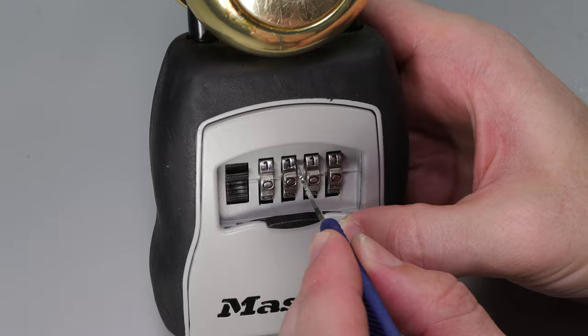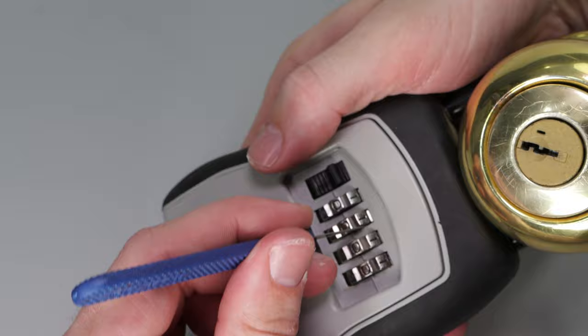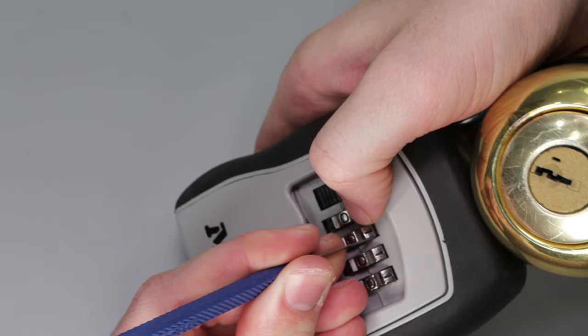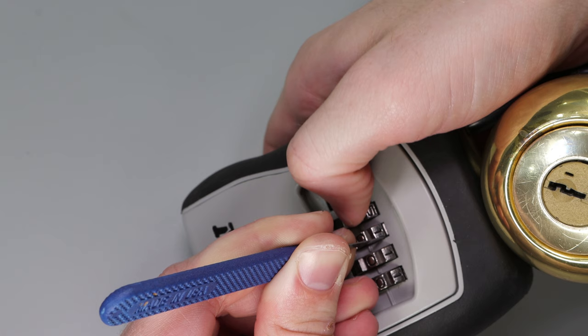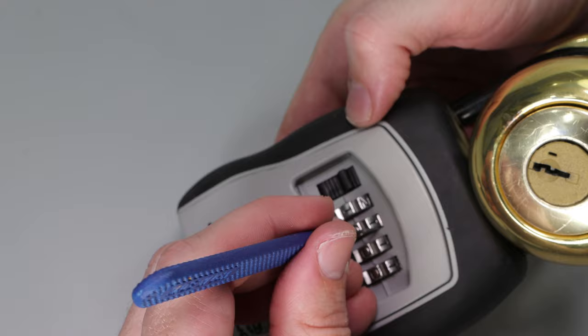We're going to put the lock down on the table so it's easy to hold. We're going to put some good strong tension on this so we can feel what we're doing, and then we're going to start to flick through these. We're just going to wait until we feel the tension build and then it will snap in place. On one, it felt like it snapped in place. So one is probably the right one for the first position.